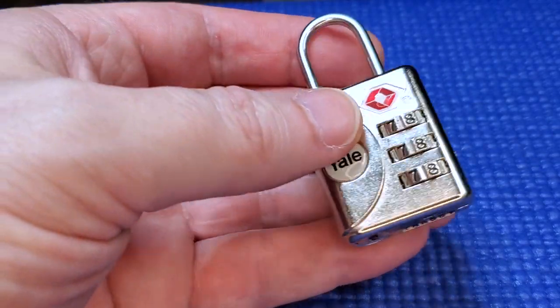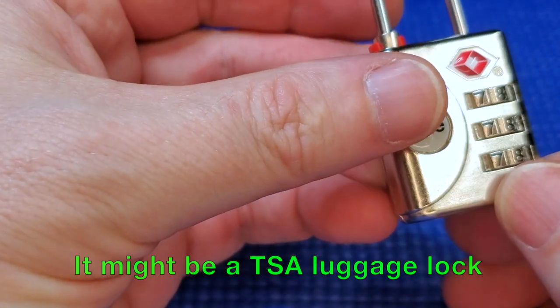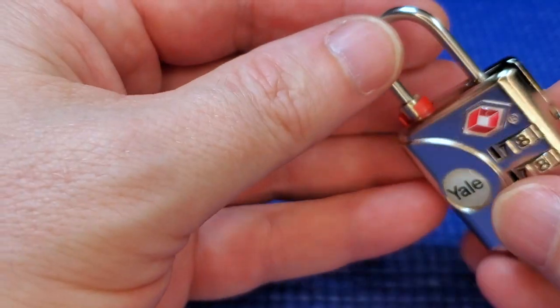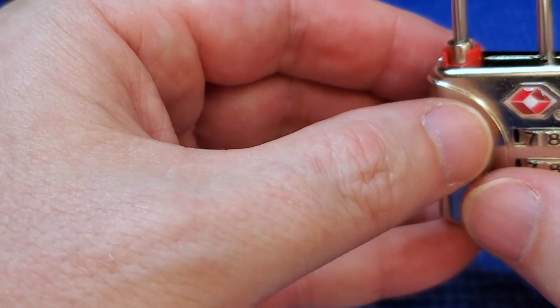You might have a three wheel combination lock, it might be a TSA lock. You might have arrived in your holiday apartment and forgotten the code. You've looked up YouTube, nothing helps.